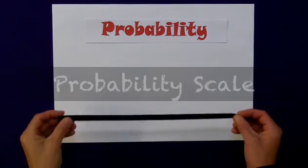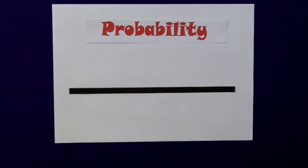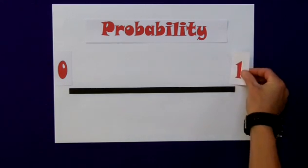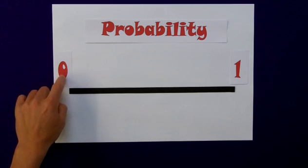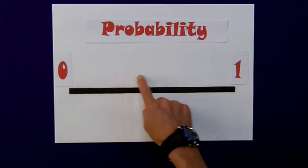All probability can be placed on a probability line, which ranges from zero at one end to one at the other end. The zero indicating the chances of something happening, it will not happen. The one meaning it is certain to happen, and everything else falls in between.